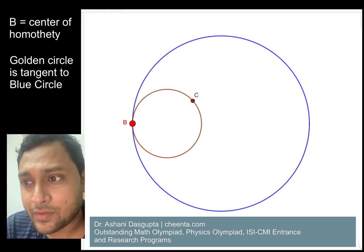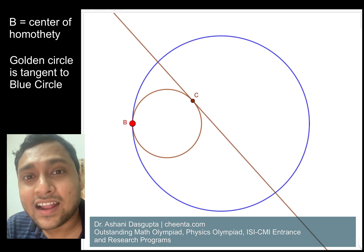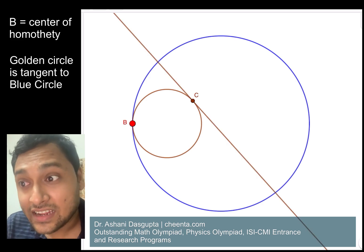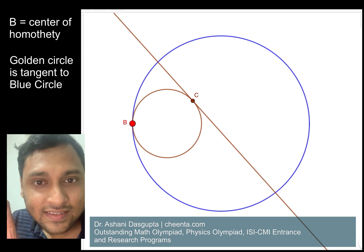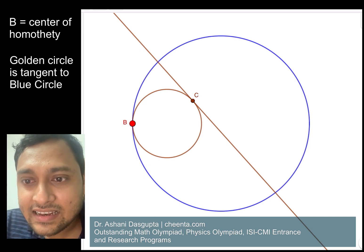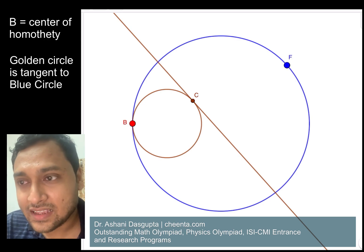So suppose we have a point C on the golden circle and let's draw another tangent line - a tangent line through C to the golden circle. Okay, and then let's draw a point F.